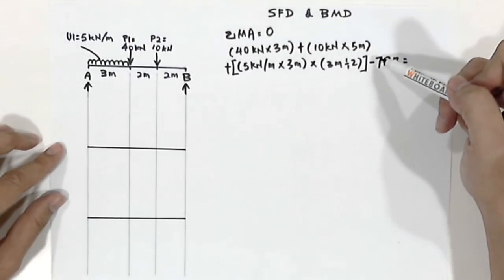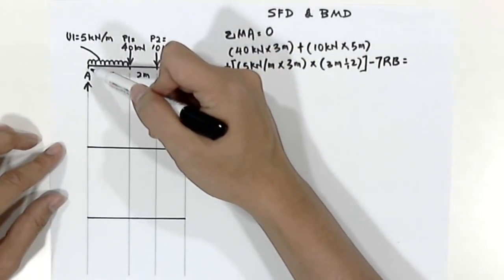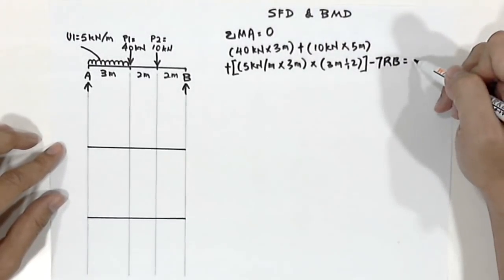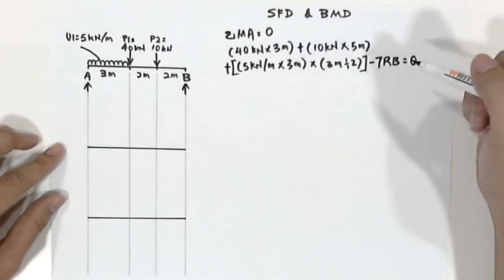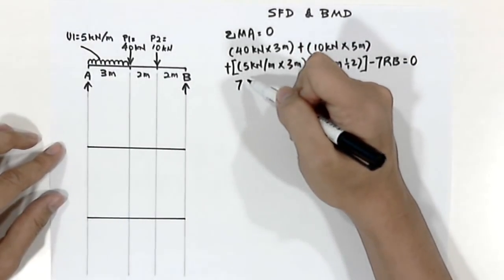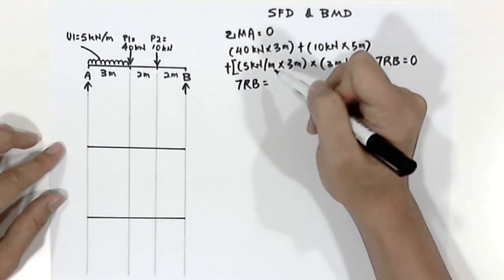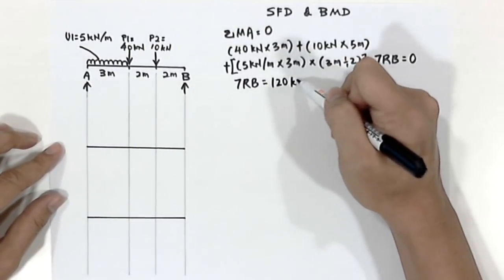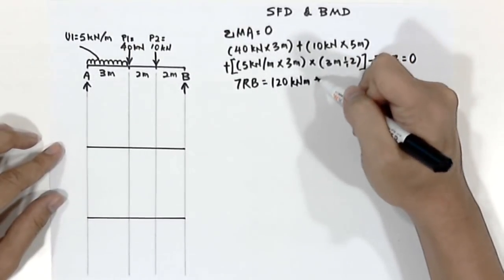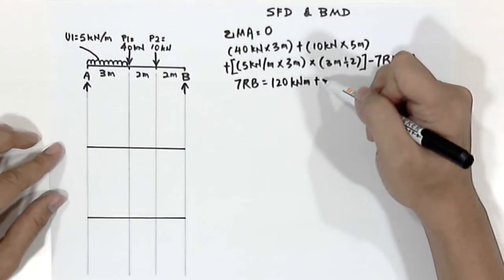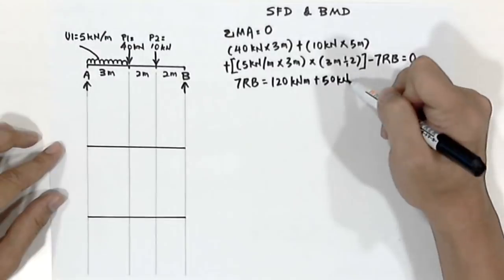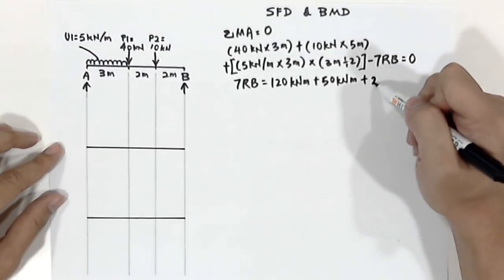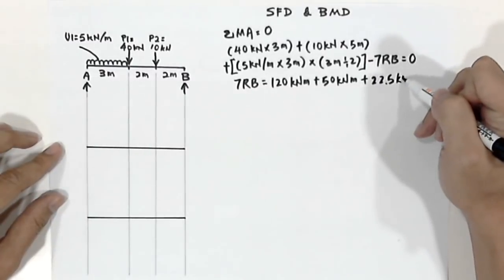Following the formula, the whole equation equals 0. We rearrange the equation so that 7Rb equals 40 times 3, which is 120 kilonewton meters, plus 10 times 5 meters, which is 50 kilonewton meters, plus — if you sum up all these — it will equal 22.5 kilonewton meters.